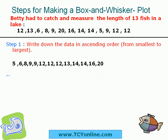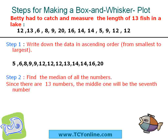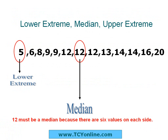Now after this, find the median of all the numbers. Since there are 13 numbers in total, the middle one will be the 7th number. In this data the 7th number is 12, so 12 is the median of this data, while 5 is the lower extreme and 20 is the upper extreme.